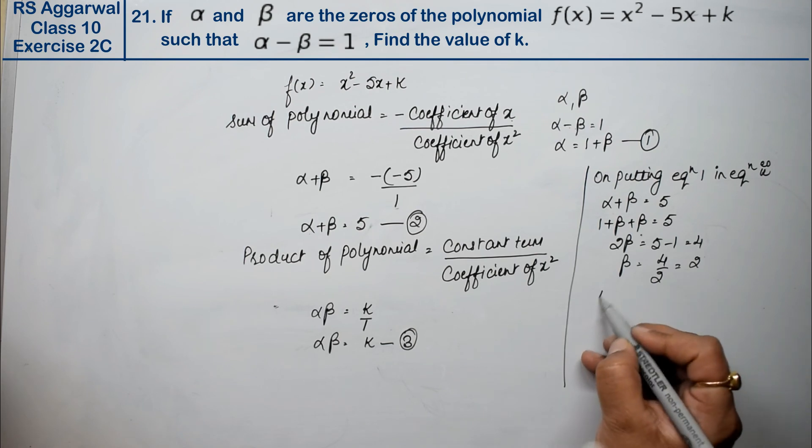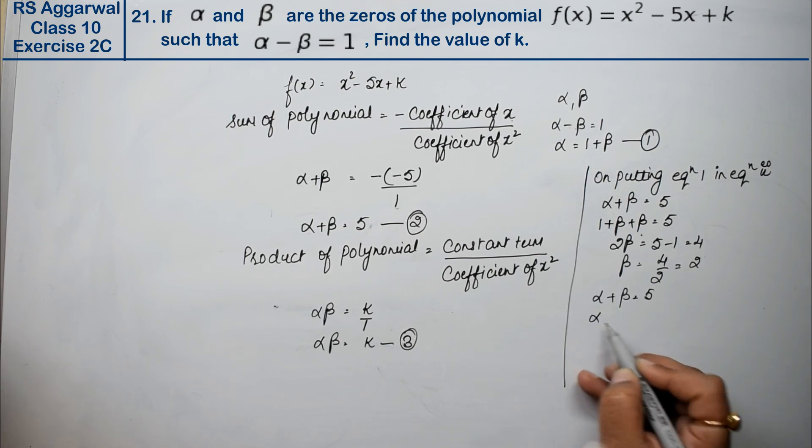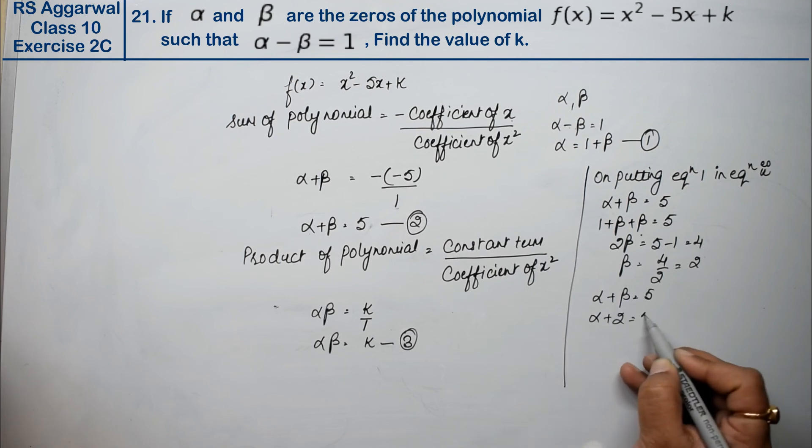Now α + β was 5, and beta value is 2. So our alpha value is 5 - 2, that is 3.